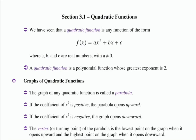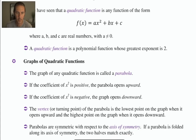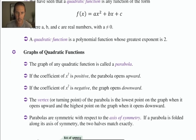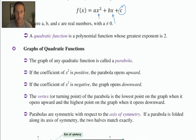Quadratic functions have some very telling aspects to them. The first comes from investigating the equation when it's in this form: ax squared plus bx plus c. Because it has a constant value, an x to the first power, and an x squared — and that's where it stops — the graph of this function is going to look like a parabola.